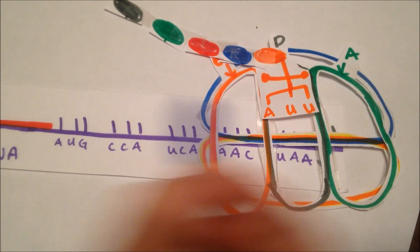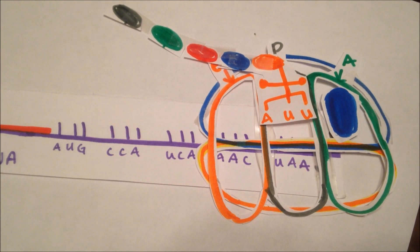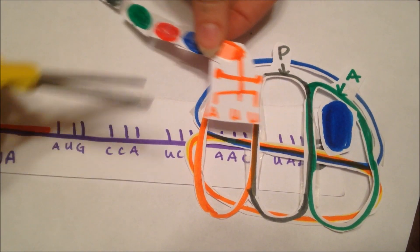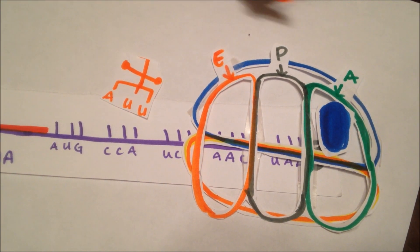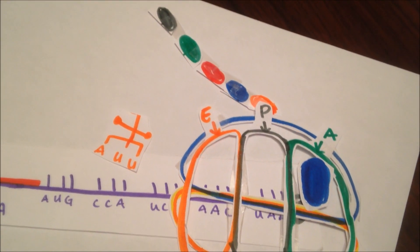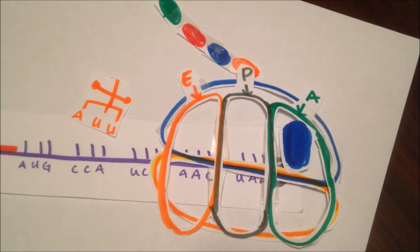Once a stop codon is in the p-site, a release factor enters the a-site, and translation is terminated. During termination, the ribosome comes apart, and the newly synthesized protein is released, ending the process of the central dogma.